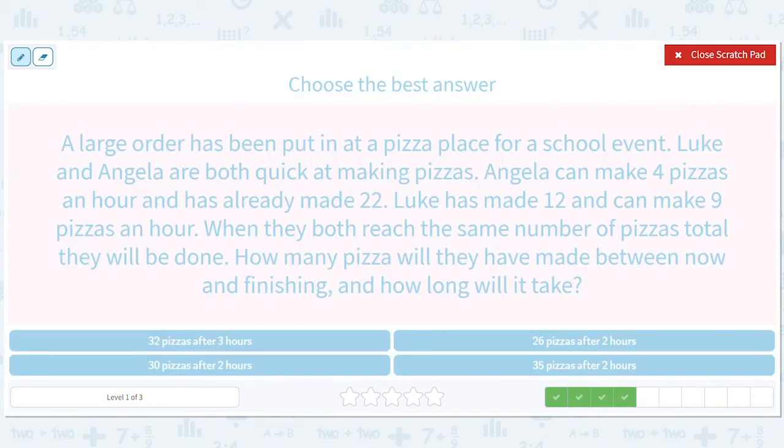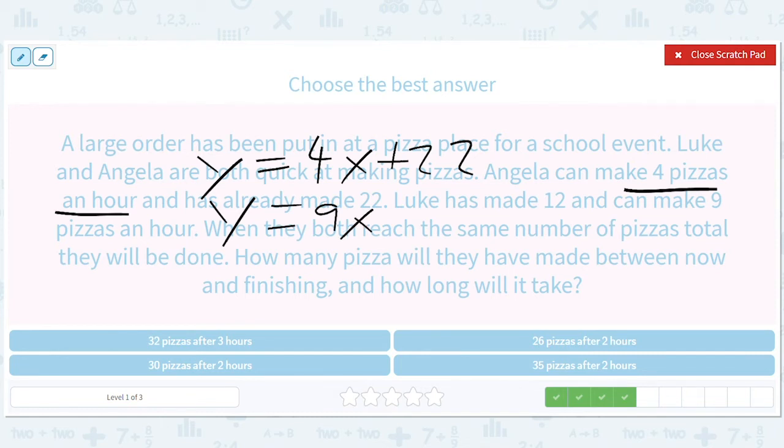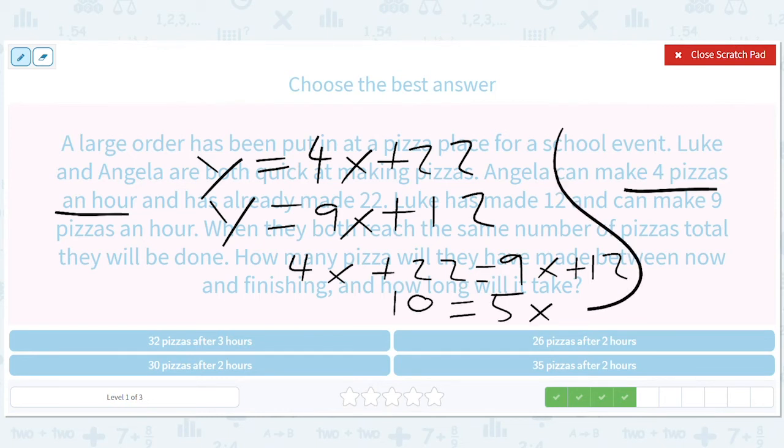4 pizzas per hour. Already made 22. 9 pizzas per hour. Already made 12. Set them equal. 4X plus 22 equals 9X plus 12. That's going to give us 10 equals 5X. That's going to give us X equals 2. So we have 2 pizzas. 2 and then we plug in the 2 here. We get 8 plus 22 is 30. So it should be 2 and 30.